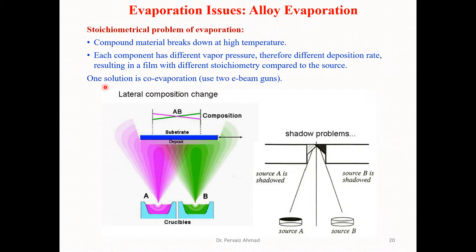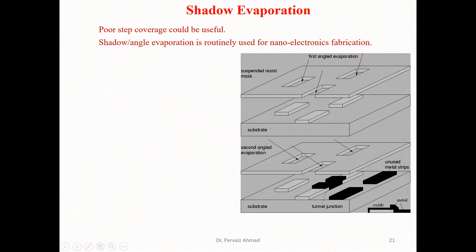One solution to the stoichiometric problem is co-evaporation using two e-beam guns. By utilizing two separate e-beam guns, we can avoid such stoichiometric problems during alloying evaporation.